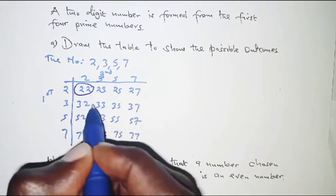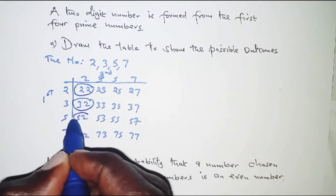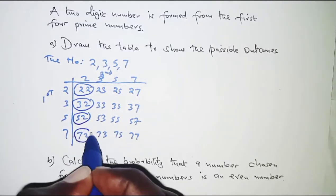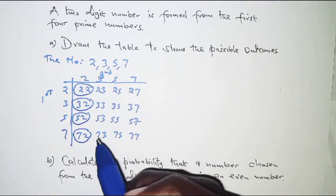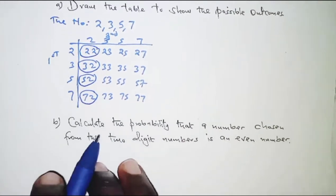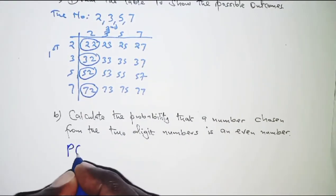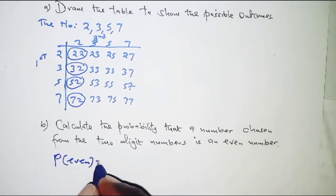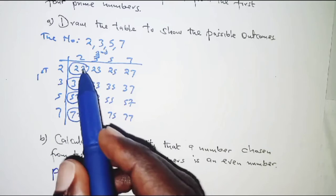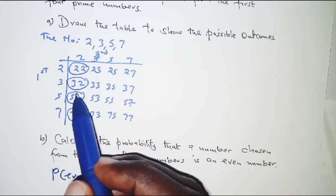So we have 22, we have 32, we have 52 and 72. There is no any other even number in the list. So in order to get the probability that the two digit number is even, we simply count the number of even numbers. That is 1, 2, 3, 4. So we have 4 even numbers.